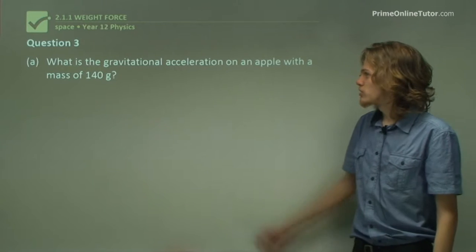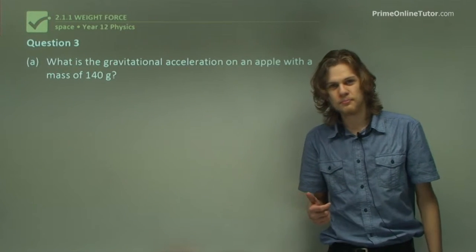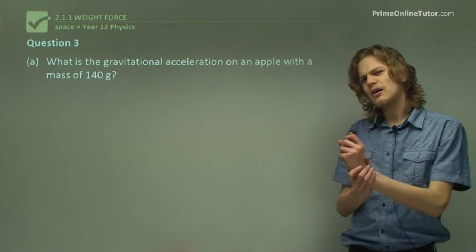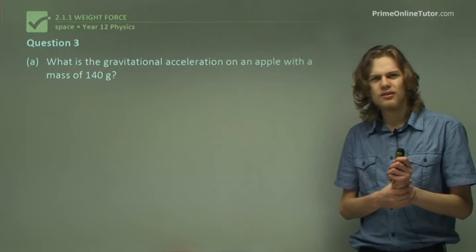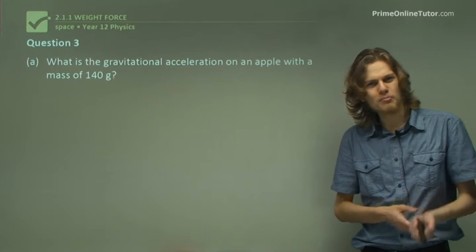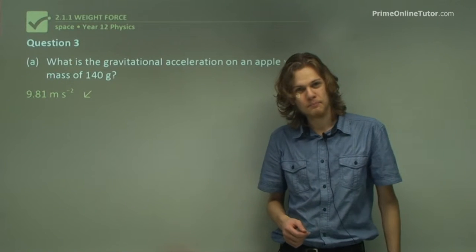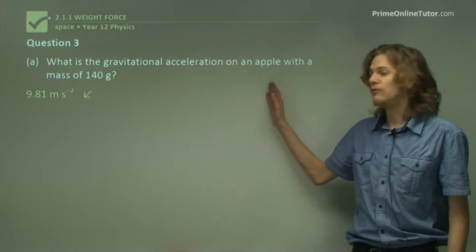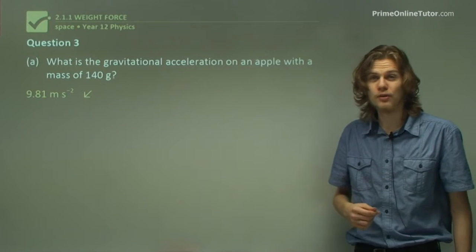Question 3. What is the gravitational acceleration on an apple with a mass of 140 grams? Now, what's the formula for gravitational acceleration? Well, you don't really have one. You have a constant, remember? 9.81 meters per second squared. All objects, regardless of their mass, will accelerate at the same rate, near the surface of the Earth, anyway.